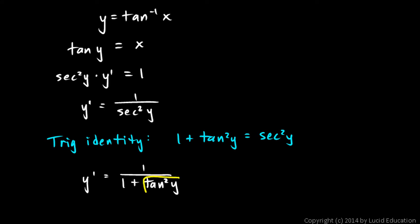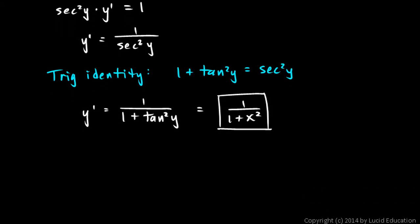So this right here, tangent of y squared, is just x squared. So this is now 1 over 1 plus x squared. And we're done. That's our answer. If you wanted to, you could write it with the standard notation. You could say the derivative with respect to x of the inverse tangent function is 1 over 1 plus x squared. And that's it. We have now differentiated the inverse tangent function.